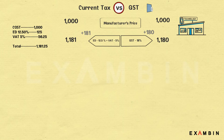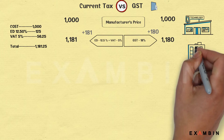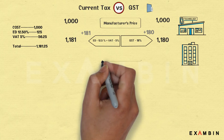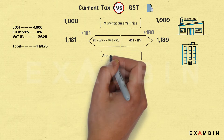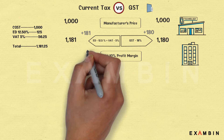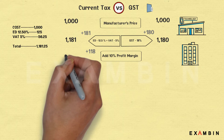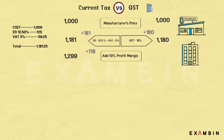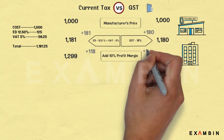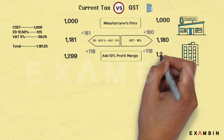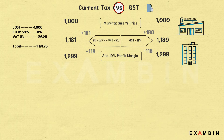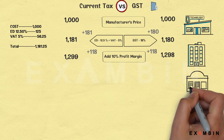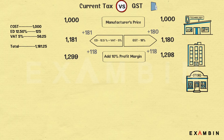The product then moves to the wholesaler or distributor, who has a 10% profit margin. In the current taxation system, with 10% profit margin it comes to 1299 rupees. There is not a big difference in the GST system either, because the prices are very similar — 1181 versus 1180 — so 118 rupees is added, giving 1298 rupees in GST.